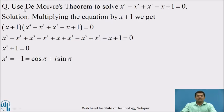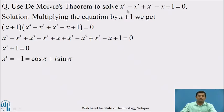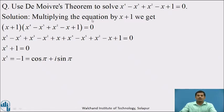Consider the first example. Use De Moivre's theorem to solve x to the power 4 minus x cubed plus x squared minus x plus 1 equal to 0. In order to obtain the roots of any algebraic equation using De Moivre's theorem, the given equation must be converted into the form x to the power n plus or minus alpha equal to 0, where alpha is any real or complex number. To convert this given polynomial into that form, we multiply it by a suitable factor. Here, we multiply by x plus 1 to the given polynomial.